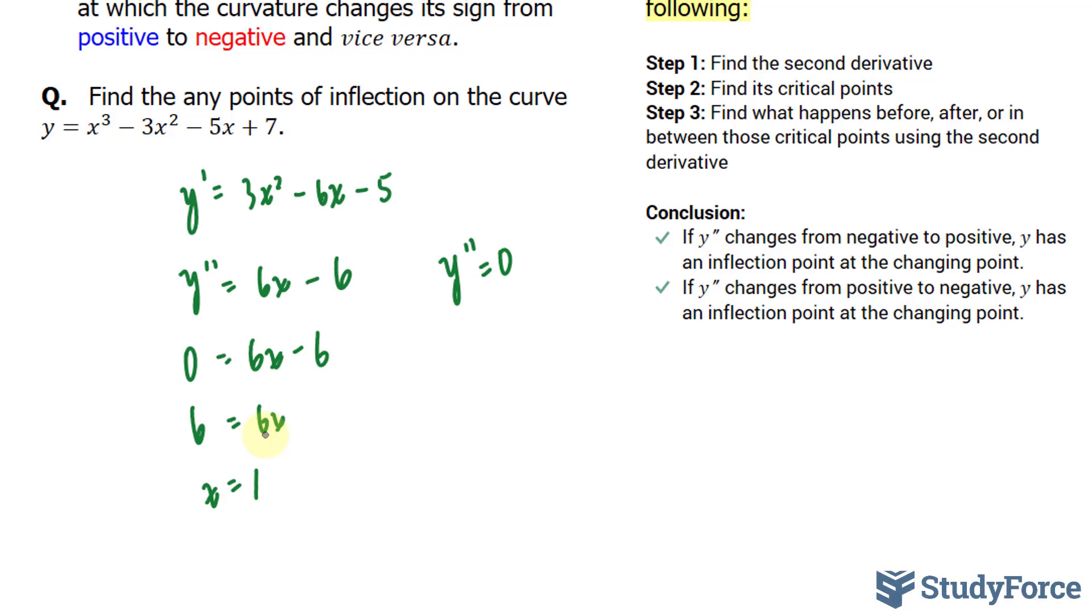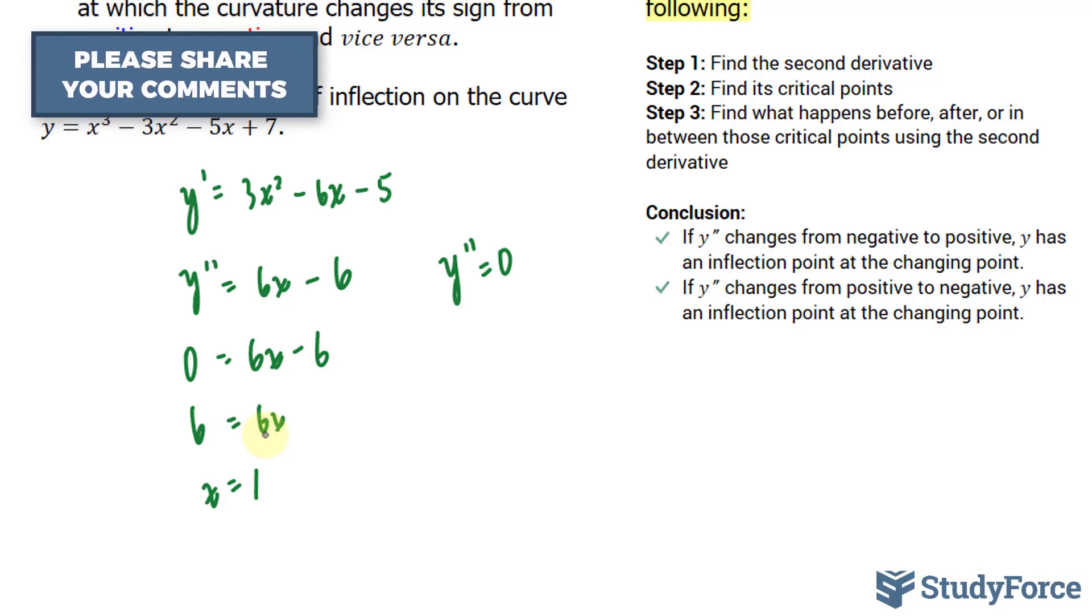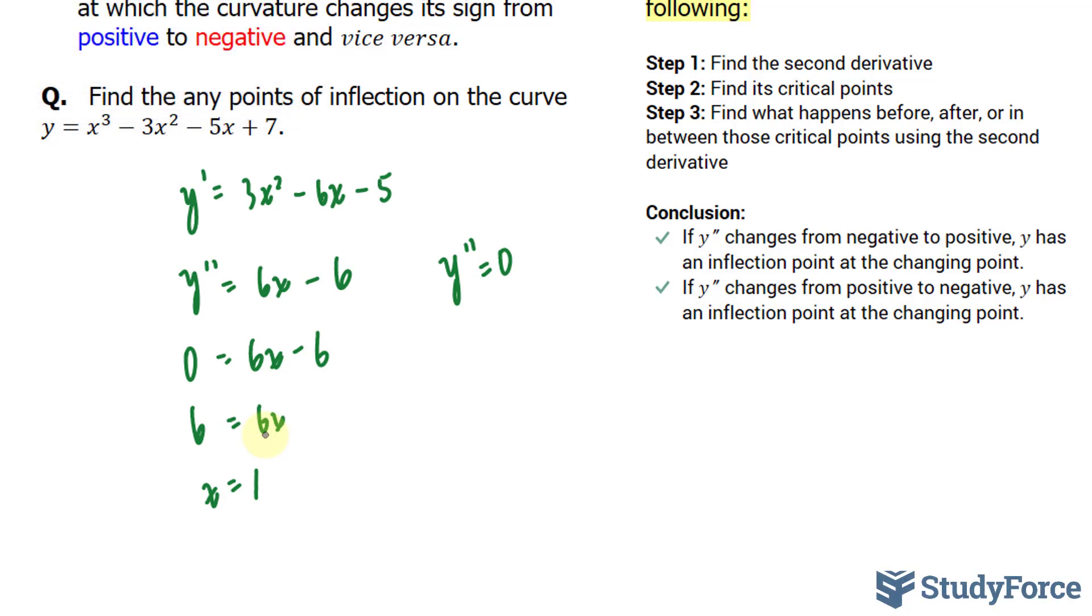In step number three, they say find what happens before, after, or in between these critical points using the second derivative. So what I'll do is create a chart and I'll say x being less than 1 and x being greater than 1. Let's find out what happens. Let's choose a value that's less than 1, substitute it into the second derivative. The second derivative was this.